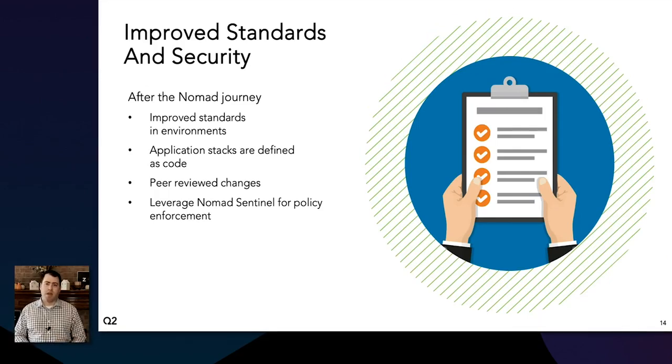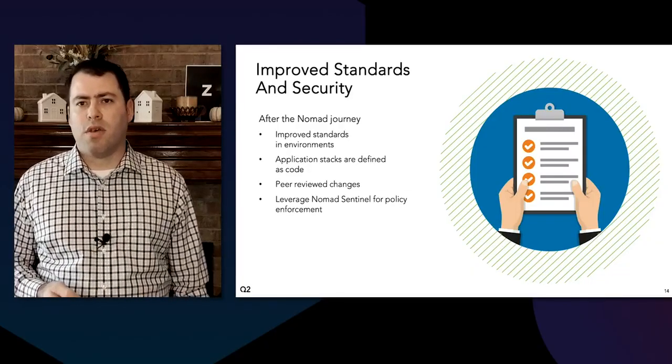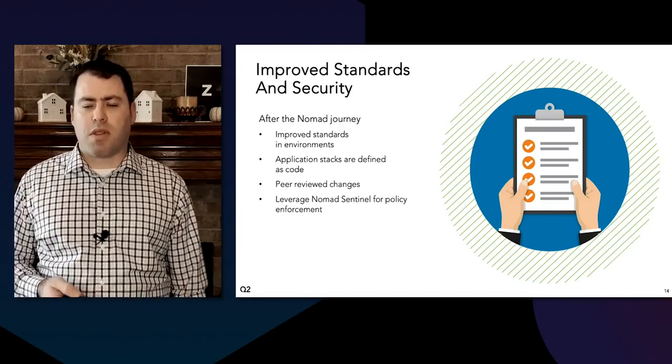Sentinel has also allowed us to specify minimum and maximum resource standards. Access to manage and deploy jobs is tightly controlled using Nomad ACLs and Vault. This means changes have an audit trail and secrets that once existed in config files have been moved to Vault. Nomad and Vault both have audit logging capabilities, which lets you have a better understanding of actions that take place in the environment — something we use heavily.